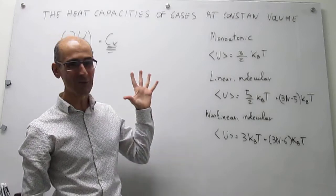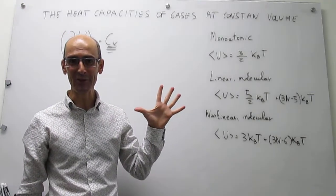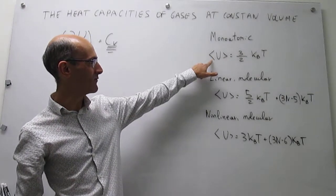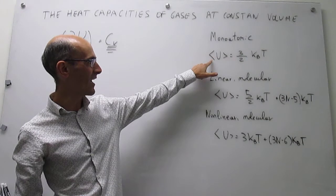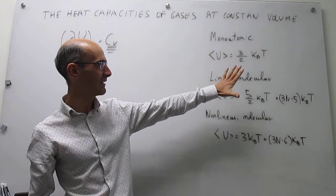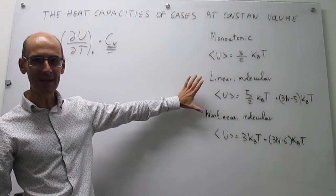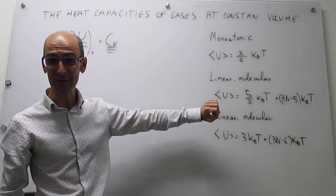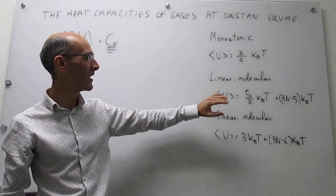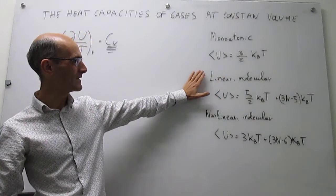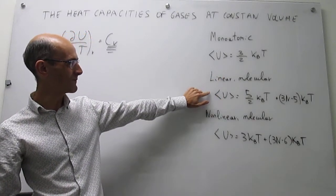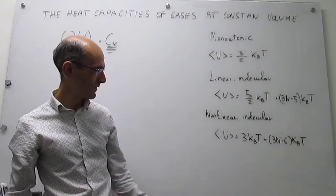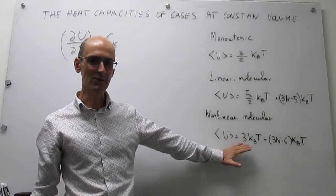According to the equipartition of energy principle, for a monatomic ideal gas the average internal energy is (3/2)k_BT. But if you have molecular gases then you will have different average internal energies — if it's linear that is the expression you have to use, and if it's nonlinear this is the expression you have to use.